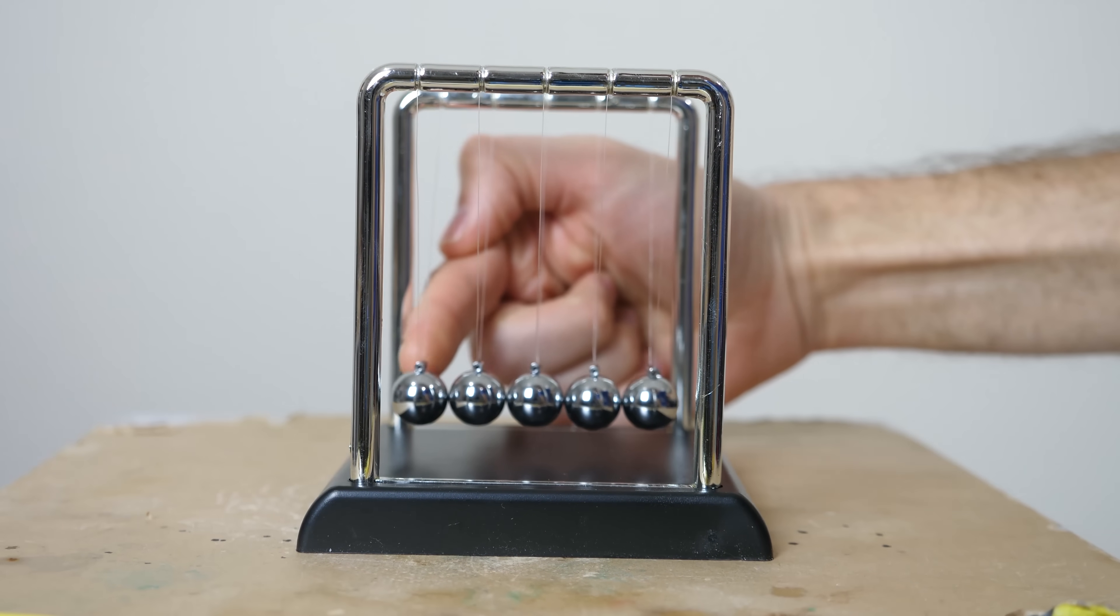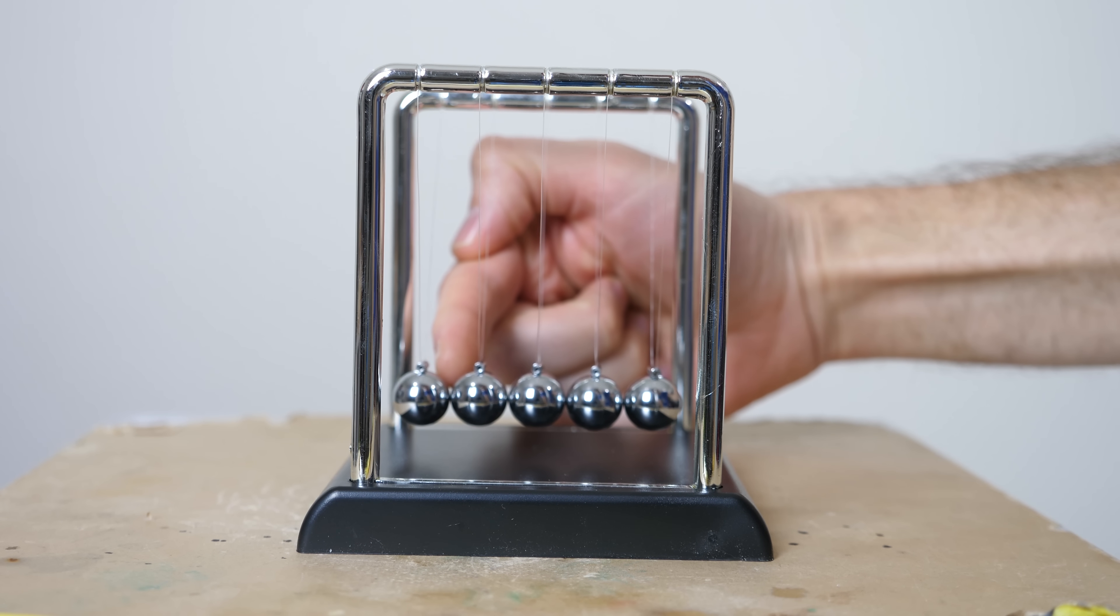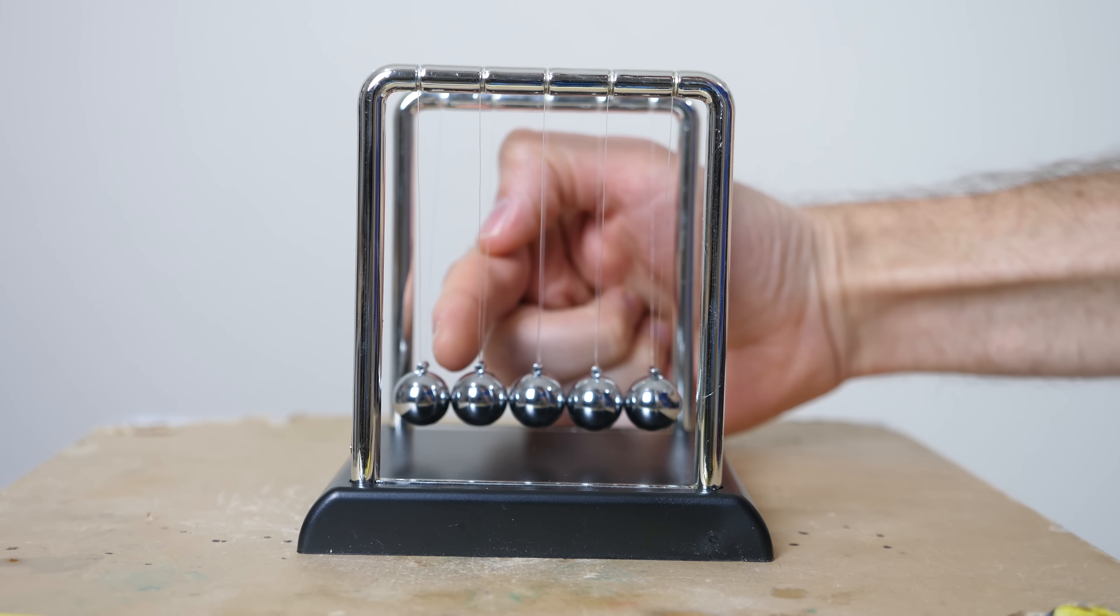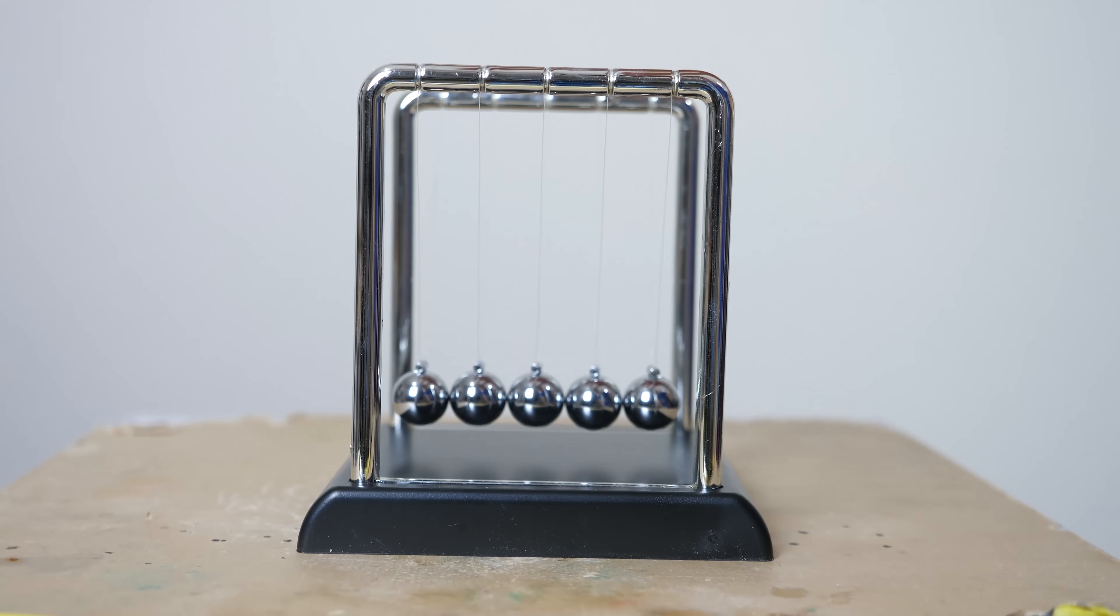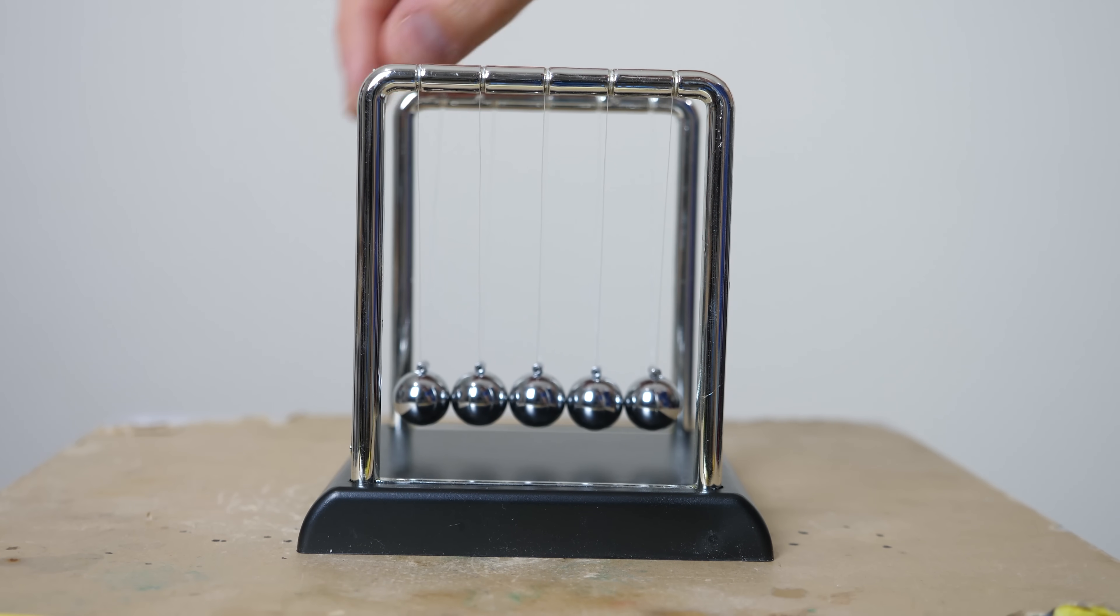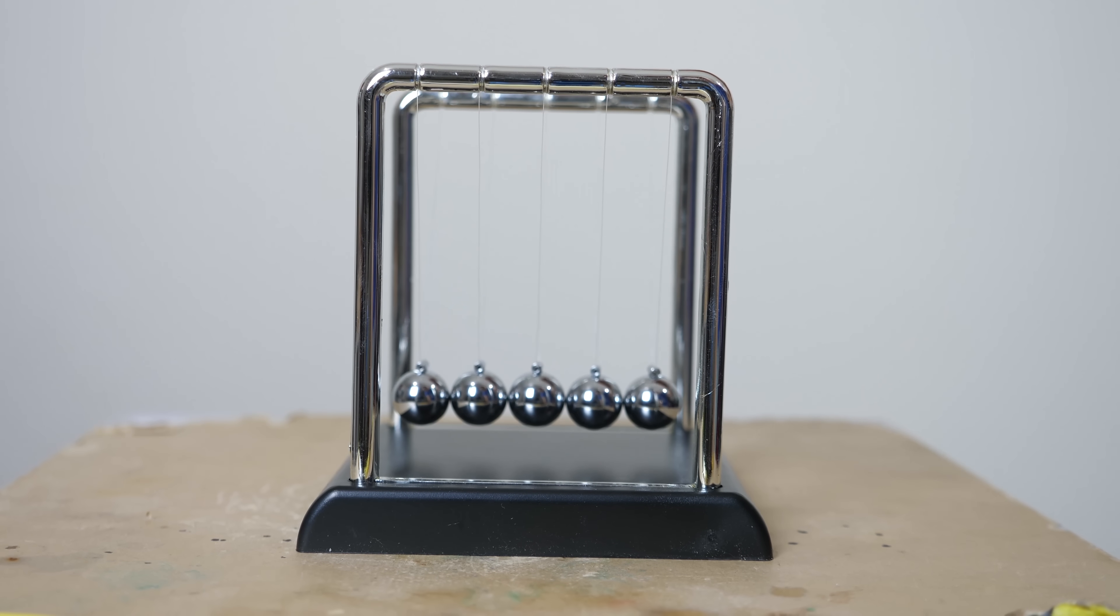You can think of a Newton's Cradle as masses that are connected through tiny little springs. And the reason they have to be modeled like that is because actually when they hit, they elastically hit each other, meaning they compress just a tiny little bit. So basically it's like there's little tiny springs connecting them.